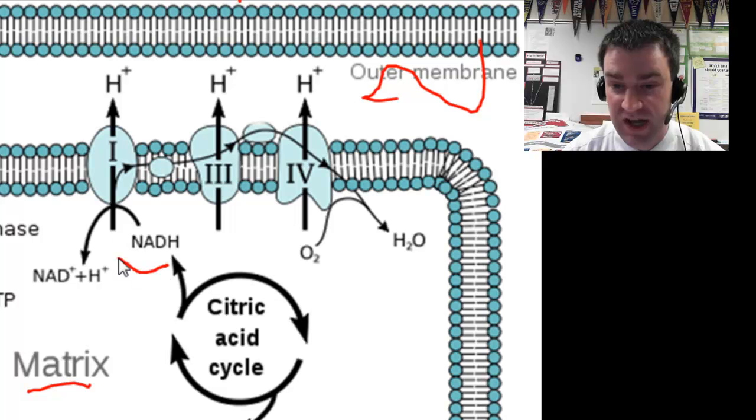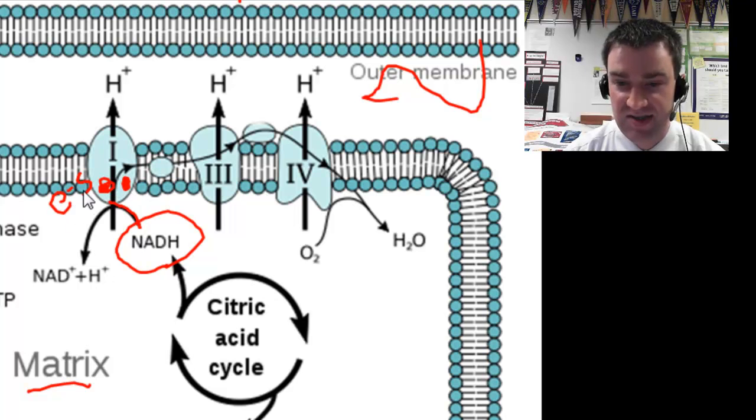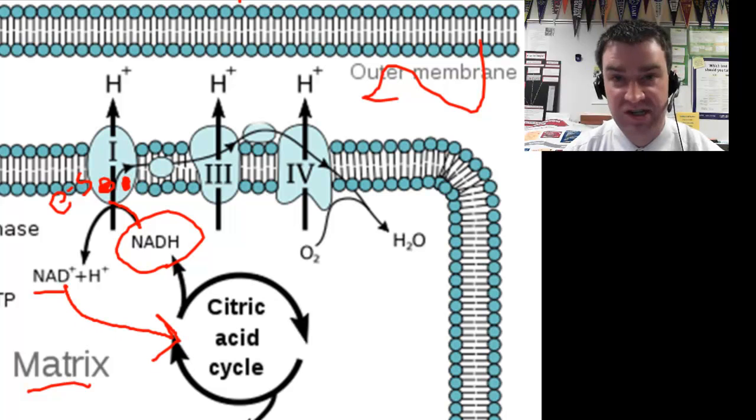Here is the electron carrier, NADH, bringing the high-energy electrons to the chain of transport proteins. So I'm just going to write E minuses here. Notice that NADH becomes NAD+ once it drops off the electrons. So NAD can then just go back to the citric acid cycle and pick up more high-energy electrons if more sugars are being cut up.